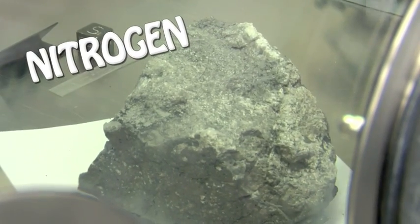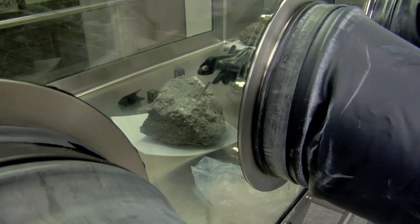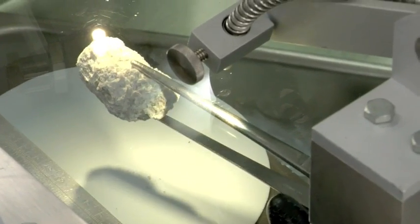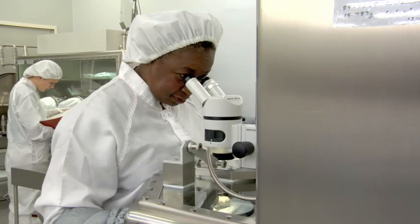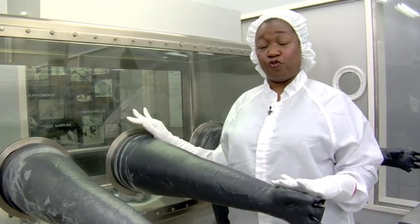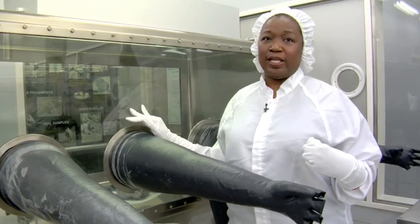We don't touch the samples except with the tools that we have, which are stainless steel, aluminum, teflon, or with a teflon glove. We're in the business of protecting these precious gems, which are from the moon, from all earthly type materials.